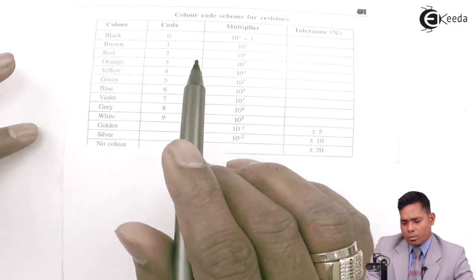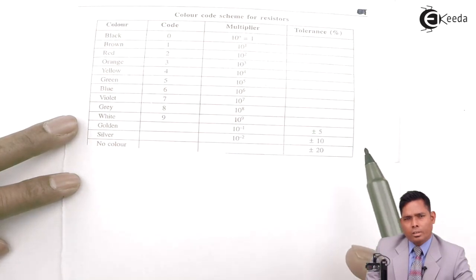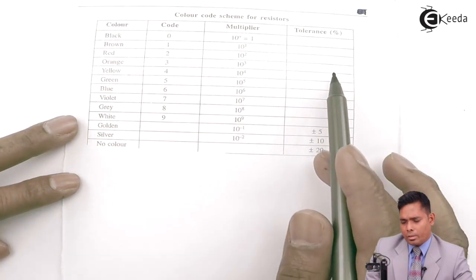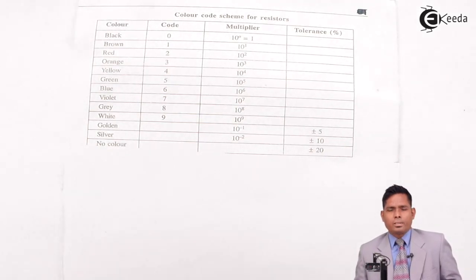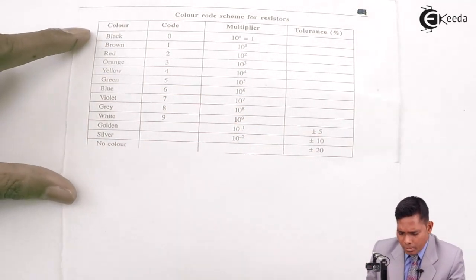For any two colors, you have to look for the first column. For the third color, you have to look for this multiplier. And the last column is the tolerance, which is the error involved in the measurement of a particular resistance.